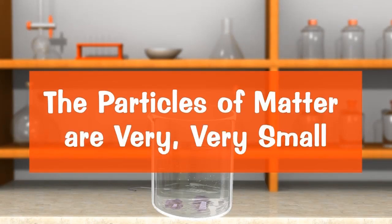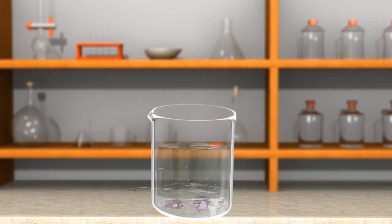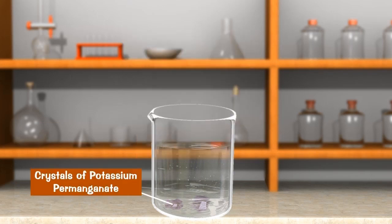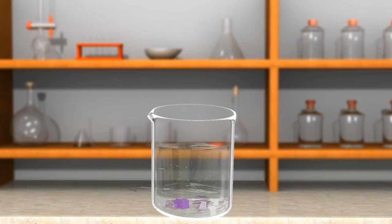Now we discuss these properties in detail. The first property is that the particles of matter are very very small. The very very small size of the particles of matter can be shown by performing the following experiment using potassium permanganate and water. We take two or three small crystals of potassium permanganate and dissolve it in 100 milliliters of water in a beaker.